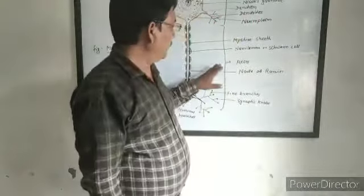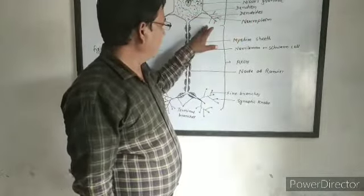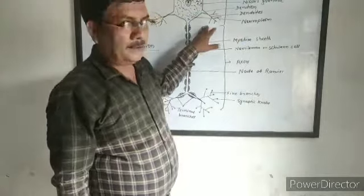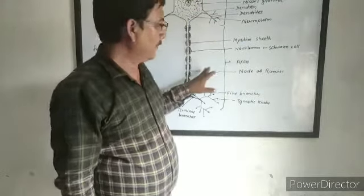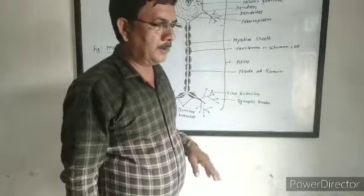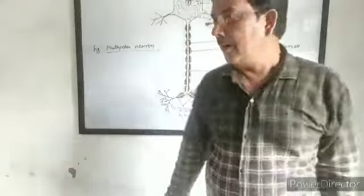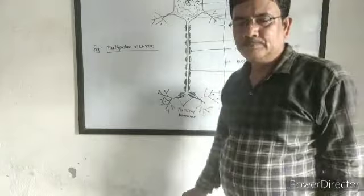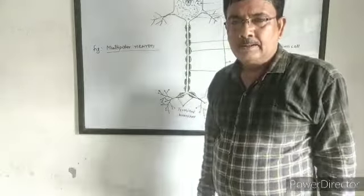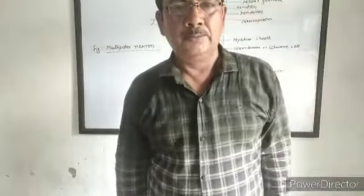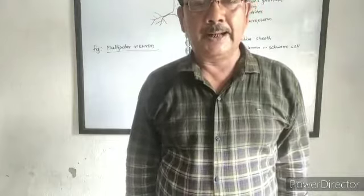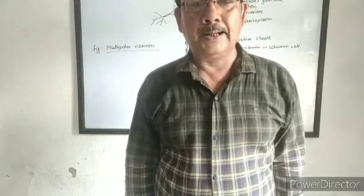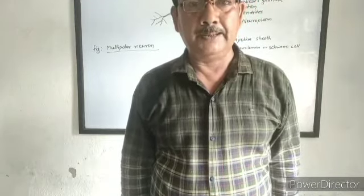So today I have discussed the structure and function of a multipolar neuron — the parts of the multipolar neuron and how it functions. In the next class, we will study the structure and function of the human brain.